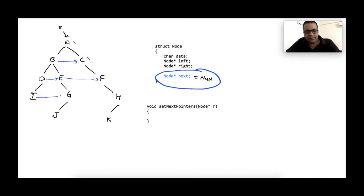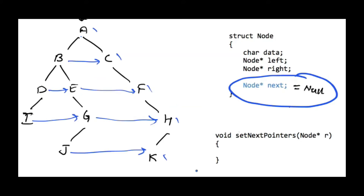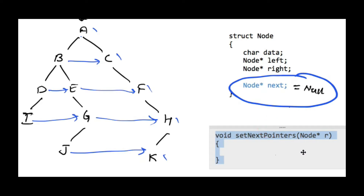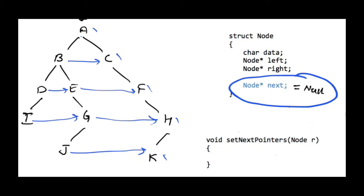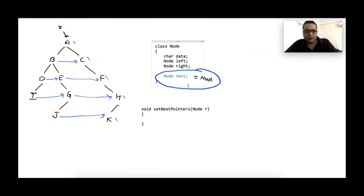The signature of the function will be something like — let's call it 'setNextPointer'. It will receive a pointer to the root node. If we are using Java, then the node becomes a class instead of a structure, and the pointer becomes an object reference. Let's take the example of Java code only — so let's say this is a class Node.